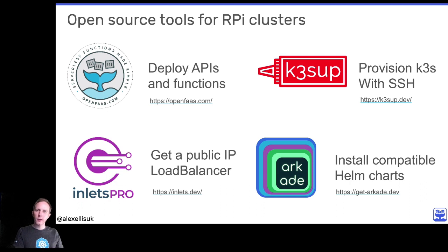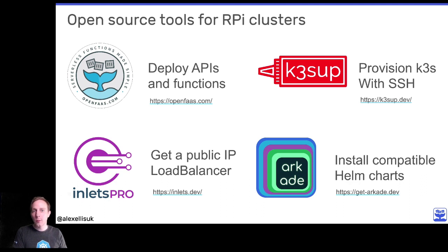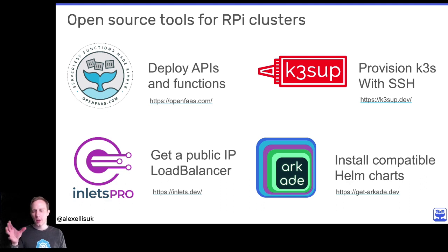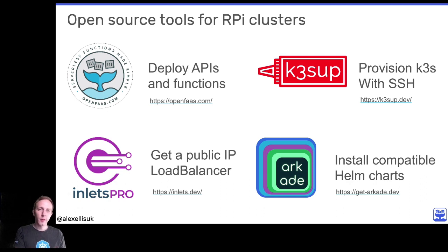Inlets allows you to get a public IP address for a load balancer — something you just can't normally get at home. In the cloud whenever you deploy a service it has a load balancer with a provisioned IP address to serve your traffic. You can't do that at home, but you can if you install Inlets with its Kubernetes operator. Then Arcade will tell you if a Helm chart is compatible with ARM or not — we have about 30 listed. Things like Istio are currently not available for Raspberry Pi, while things like OpenFaaS and Minio are available and you can just go and install them.